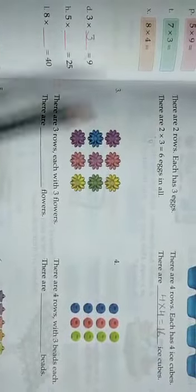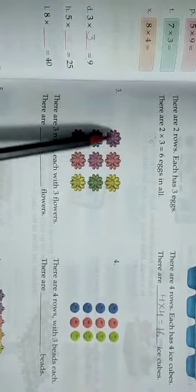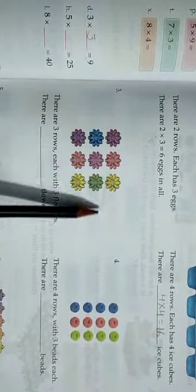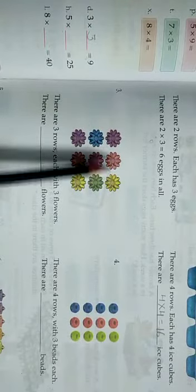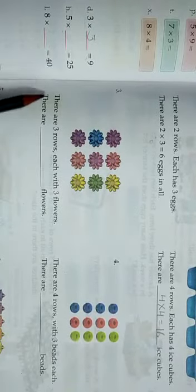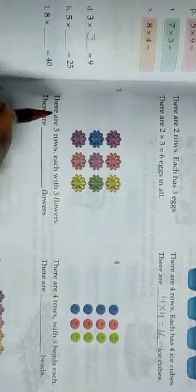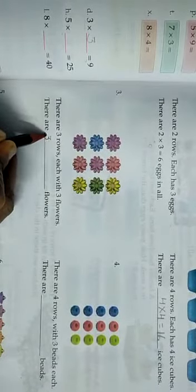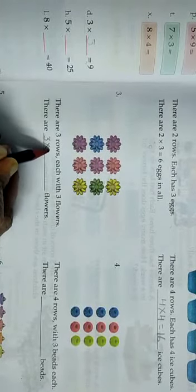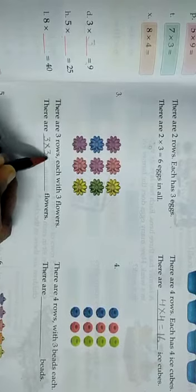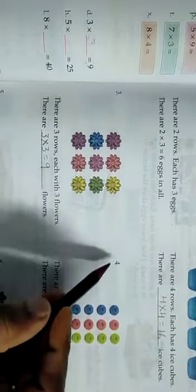Now third one. There are three rows. How many rows are there? One, two, three. Each with three flowers. In each row, how many flowers are there? One, two, three. There are dash flowers. So immediately, how many rows do we have? We have three rows. And in each row, how many flowers? Three flowers. So obviously, three threes are nine. This will be our answer.